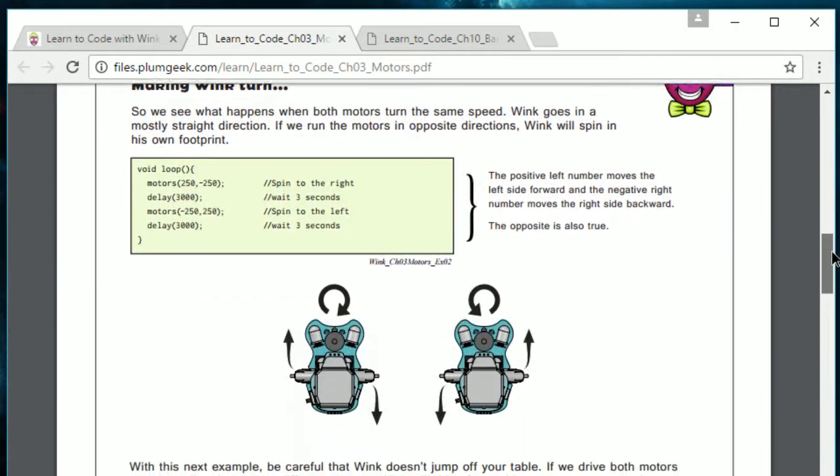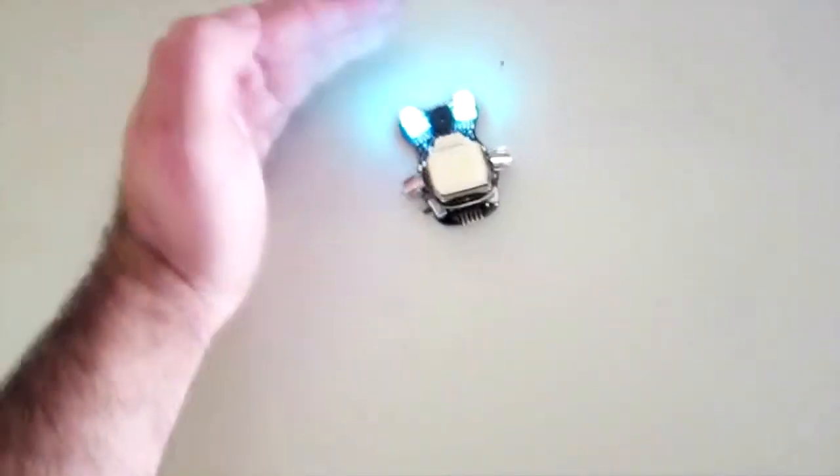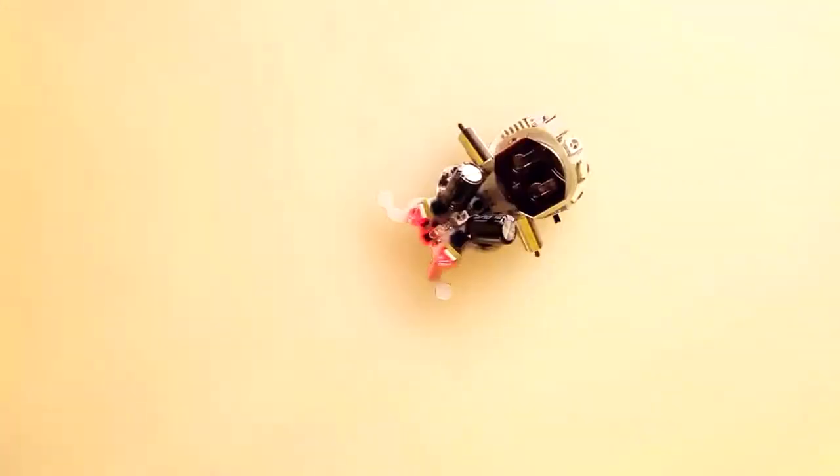As students move through the lessons, they continue to do more interesting things with the robot while learning core skills along the way that apply to many different languages. Ringo is similar to Wink and adds some additional smarts like an accelerometer and gyroscope, along with additional options to add even more personality.